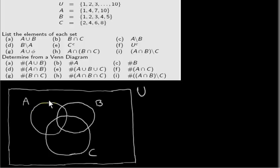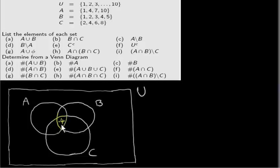So we draw three circles to represent the three sets showing the overlaps. The first thing we should do is get the intersection of all three sets — find the elements that are in A and B and C. So what element is in all three of them? Well, it's four. It's the only element that's in all three sets. There's only one element in the intersection of the three sets.